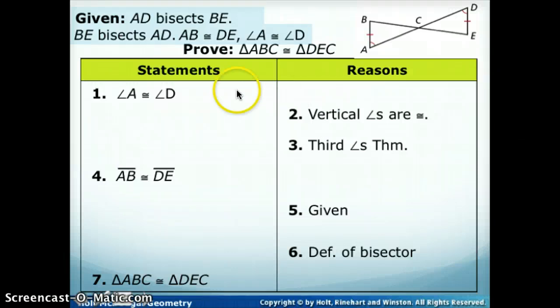So the first part we need to do, we have statement number 1 says that A is congruent to D. Well, how did we know that? And since it's the first step in our proof, hopefully this is an easy one. I see it in the given. So I'm going to say my first reason is given.